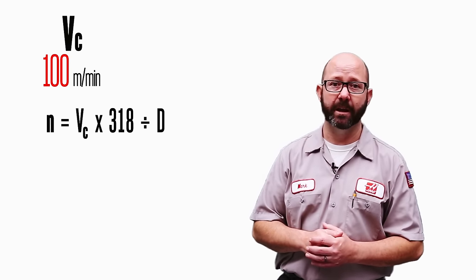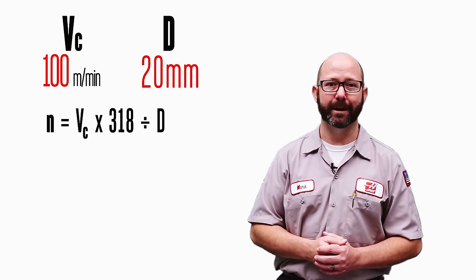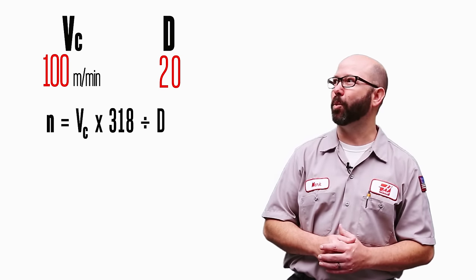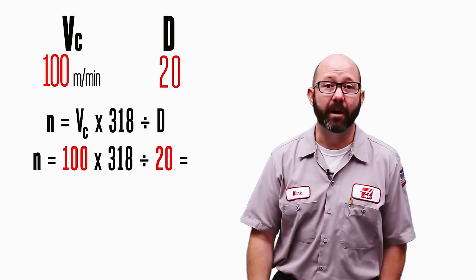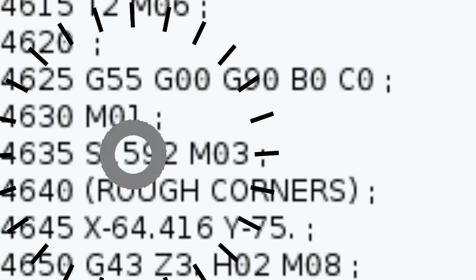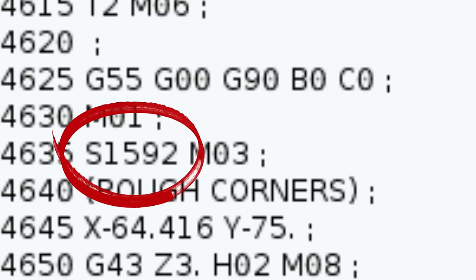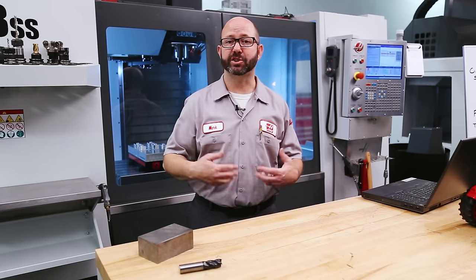For my tool and material, we're going to use a cutting speed of 100 — that's 100 meters per minute. I'm using a 20 millimeter end mill, so we'll drop in 20 there. After a little bit of math, we come up with an RPM value of 1592. So our S code back in our program is going to be S1592. We now know how fast to spin our tool — our speed.